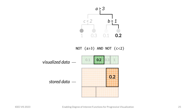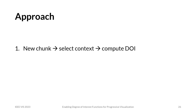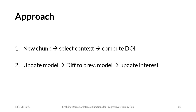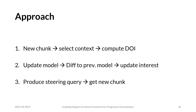Regression trees are ideal because they allow us to predict the interest of the entire dataset without having to touch every item to build that model. Our approach consists of three steps: first, we take in a new chunk, select items as context, and compute a Degree of Interest Function. Then we update the model, compute the difference to the previous model, and update outdated interest values. Lastly, we produce a steering query to get the next chunk. We use these three steps iteratively.